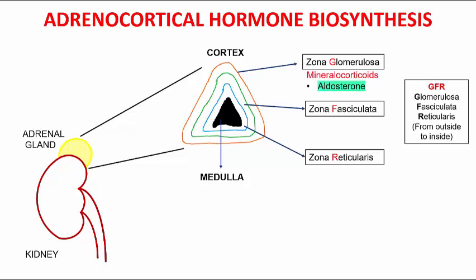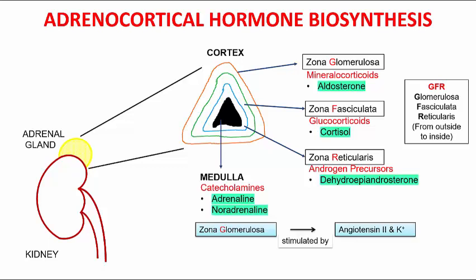Zona glomerulosa produces mineralocorticoids, mainly aldosterone. Zona fasciculata produces glucocorticoids, mainly cortisol. Zona reticularis produces androgen precursors, mainly dehydroepiandrosterone (DHEA). The adrenal medulla mainly produces catecholamines such as adrenaline and noradrenaline.